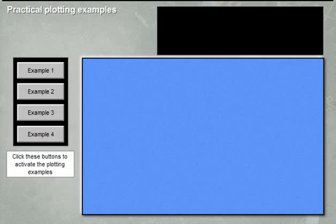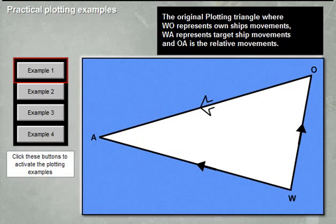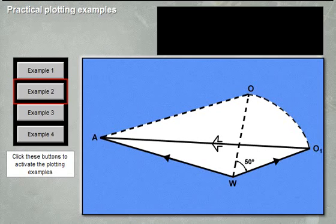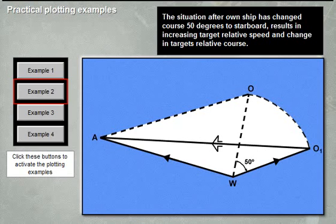You should be able to gain a good understanding about how own ship's course and speed changes affect the plotting triangle. That is, how to plan collision avoidance. W represents own ship's movements, O represents target position, and WO is the relative movement.